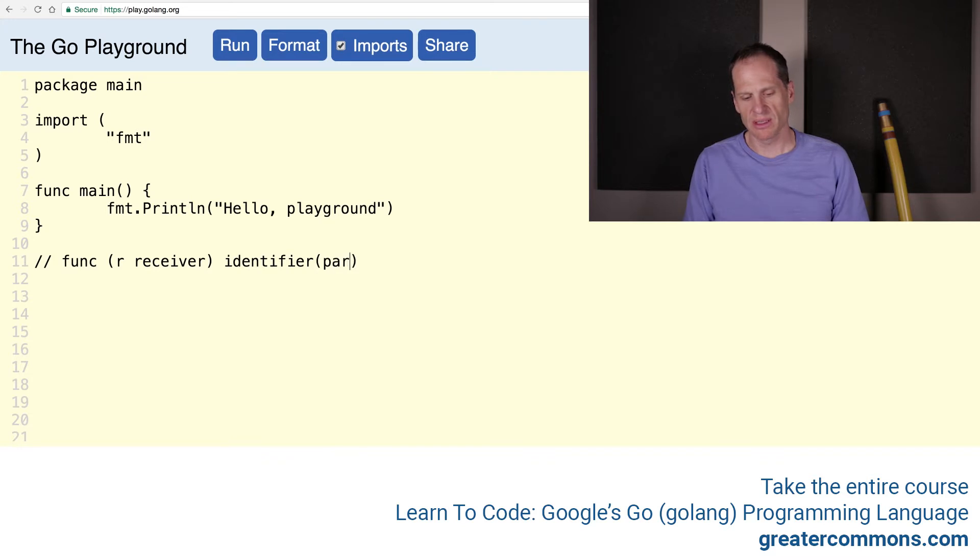Then we're going to have an identifier. Then we're going to have parameters. And then we'll have returns, and you can have multiple ones or a singular. And then you're going to have code. So your code might be represented like this. That's the syntax our functions will take.